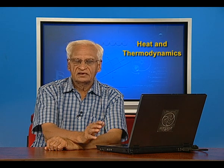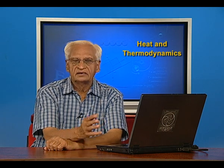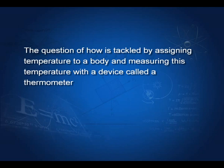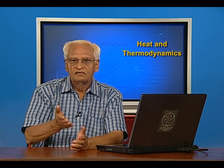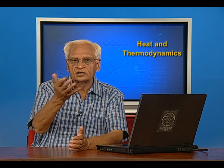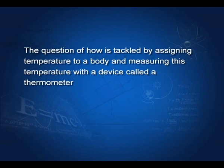These two questions — the possibility of confusion, and the question of how hot or cold — are tackled by two things. The question of 'how' is tackled by assigning temperature to a body and measuring this temperature with a device called a thermometer. By measuring with a thermometer, we can tell how much hotter something is than something else. So we will talk of temperature and thermometer.